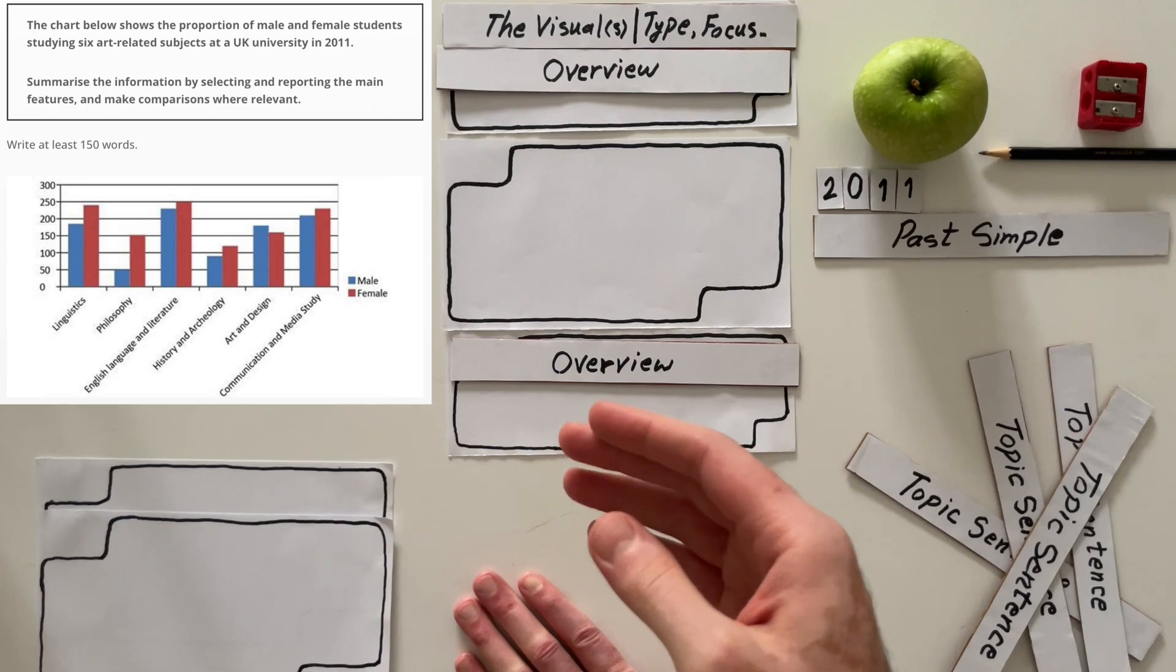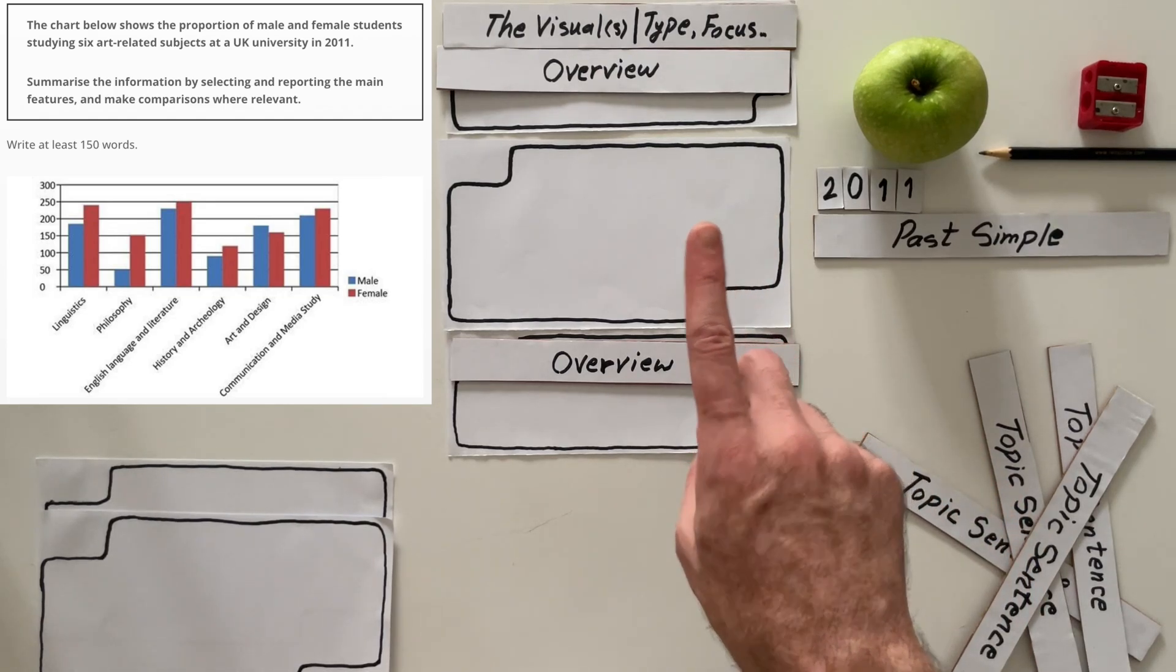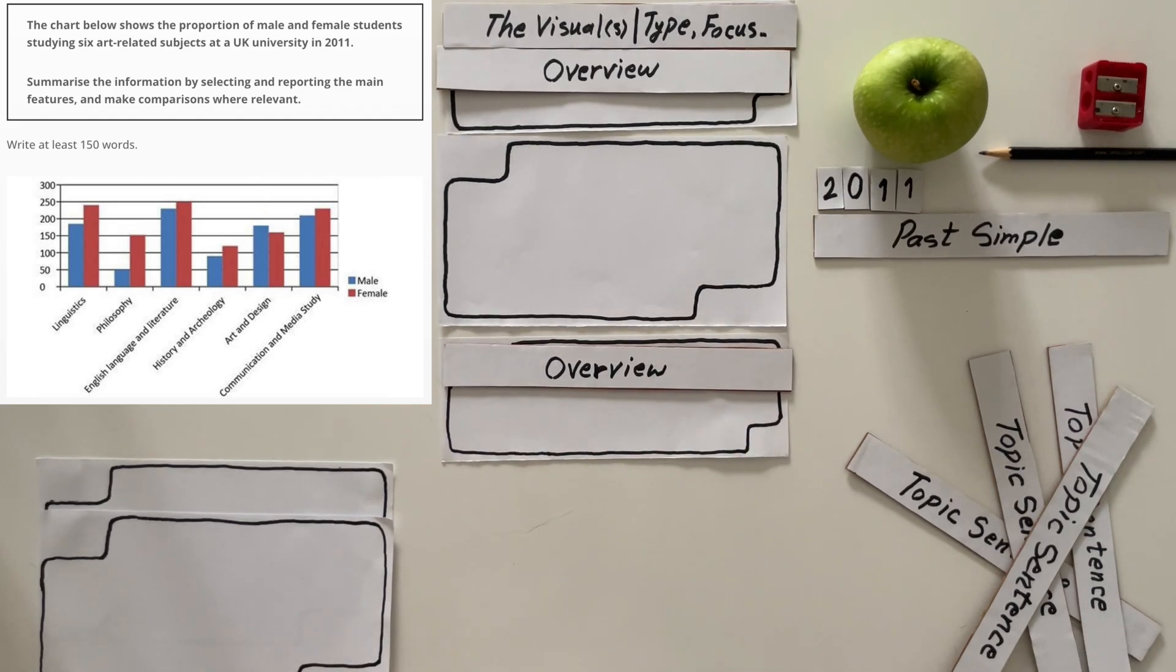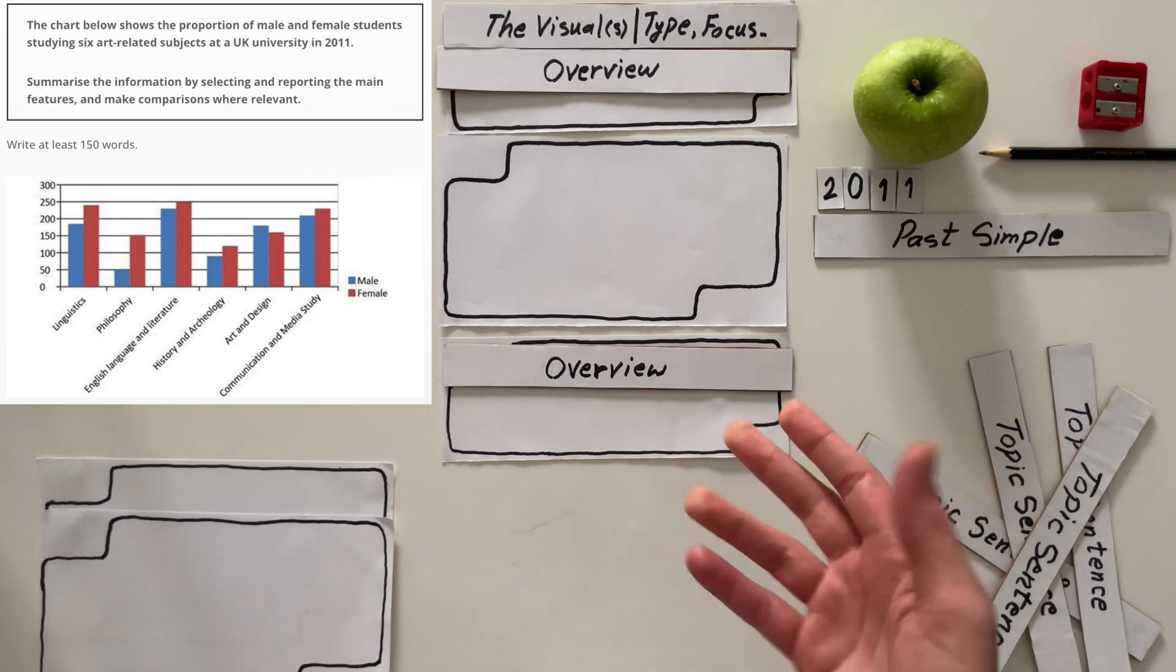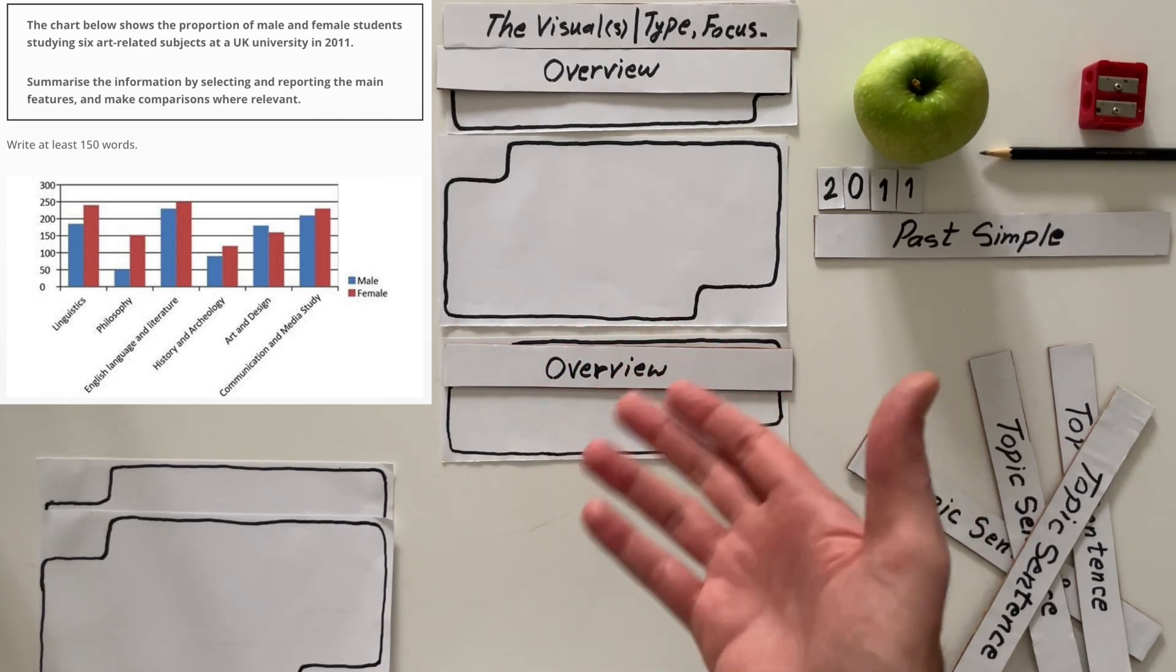I see in all categories, the number of female students is higher than the male students, except for art and design. That's an exception. That one is different. Male students are more than female students. Interesting. Second interesting point for me is the highest difference between the number of female students and male students happened in philosophy. There are almost 150 female students versus only 50 male students. Three times the number of male students. That pretty much, as you can see, didn't happen for any other category.